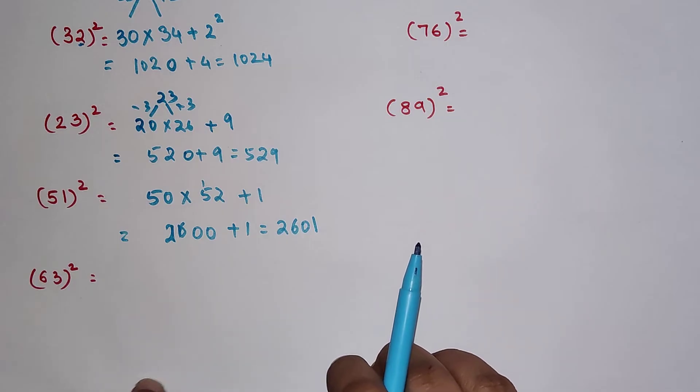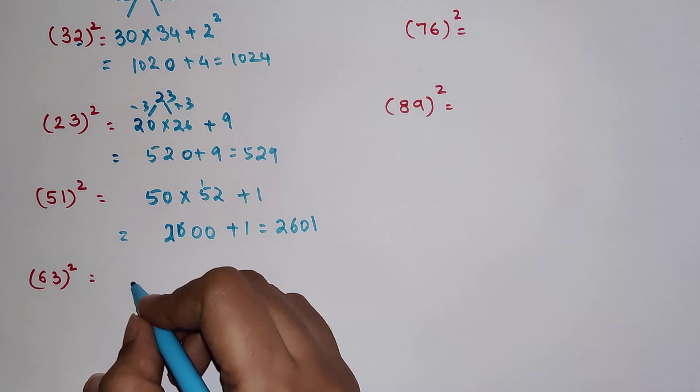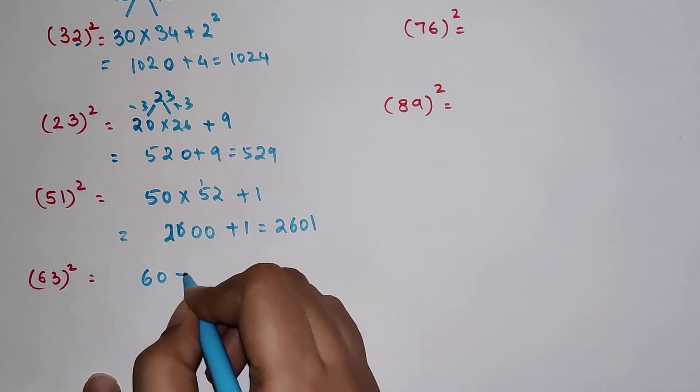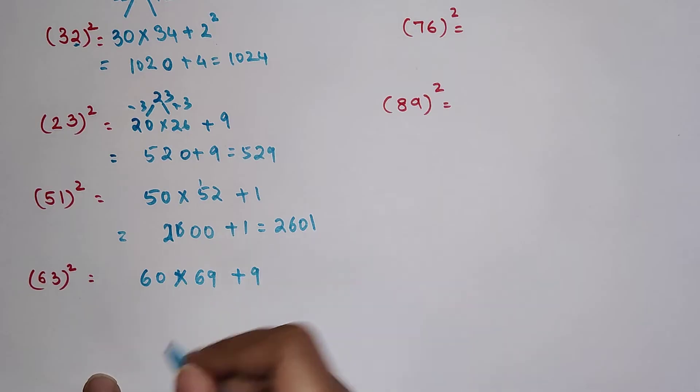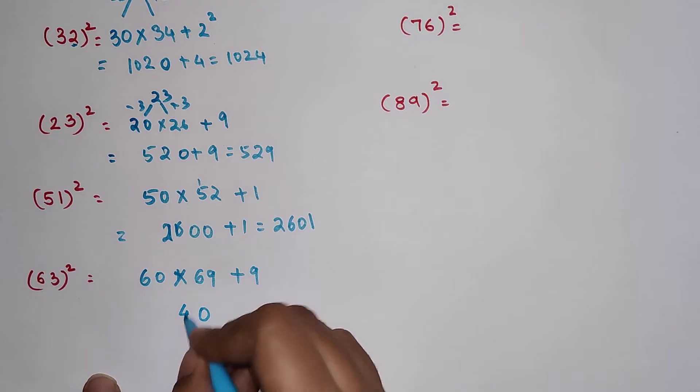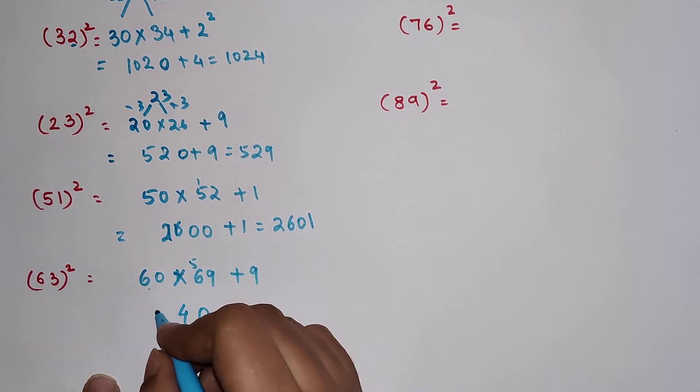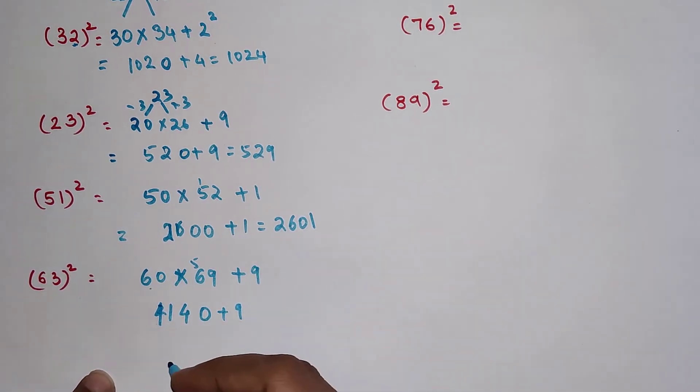Now we have 63 square, which is 60 multiplied by 66 plus 3 square which is 9. So 69 into 60 is going to get you 0 and 9, 4, 5 carry.